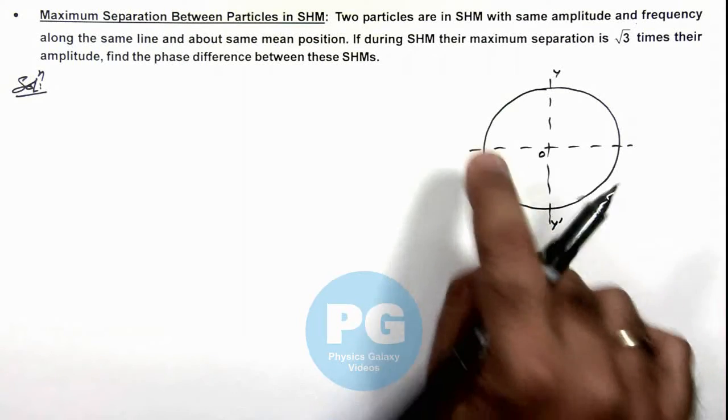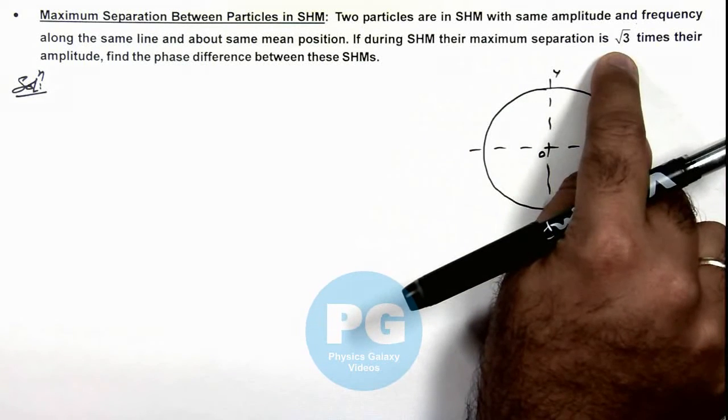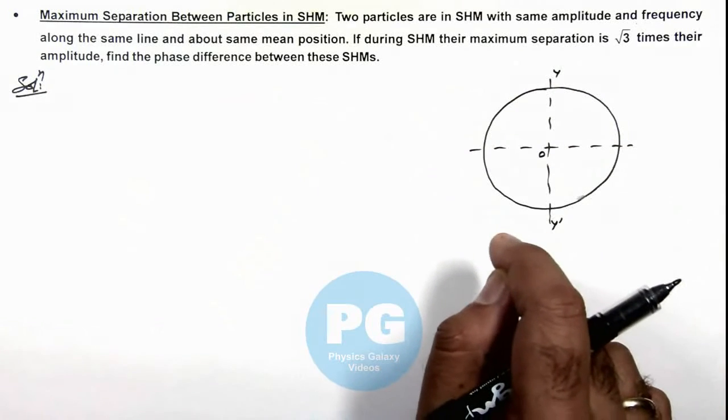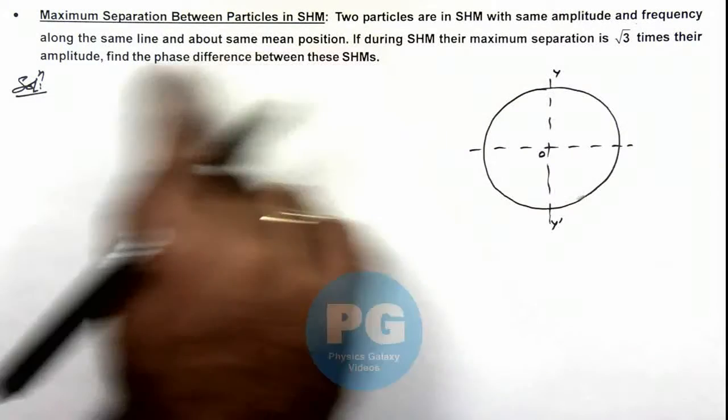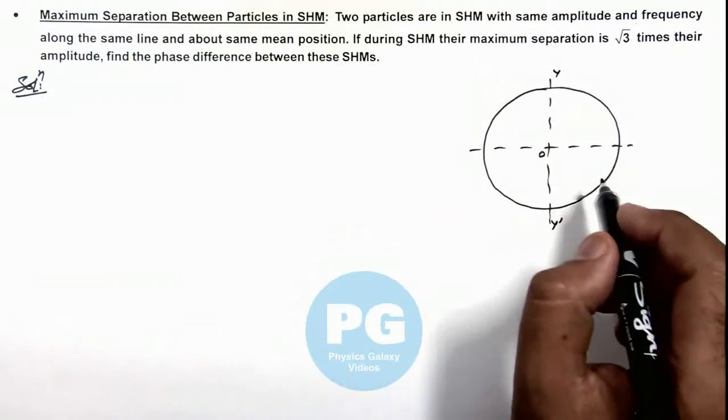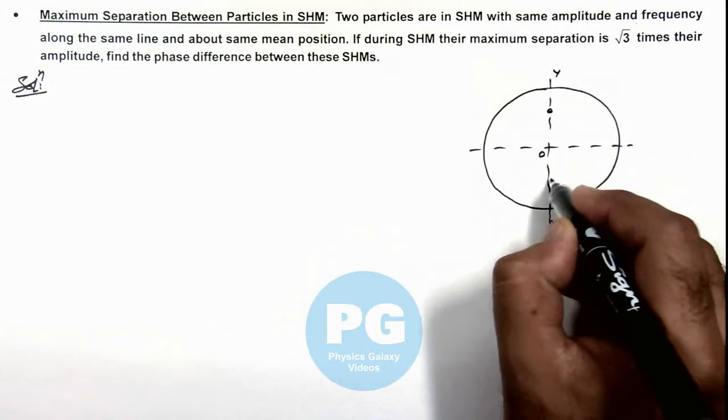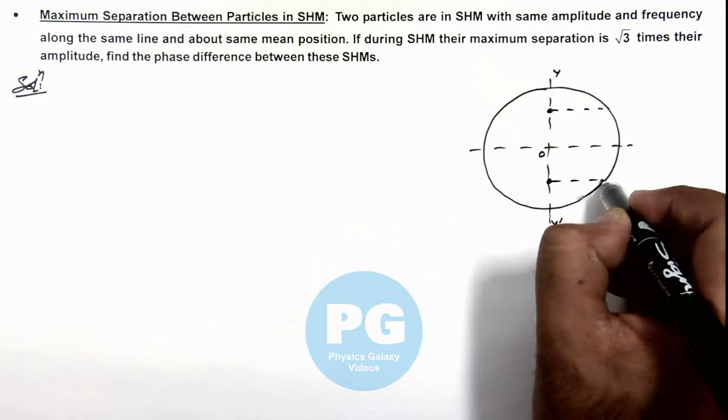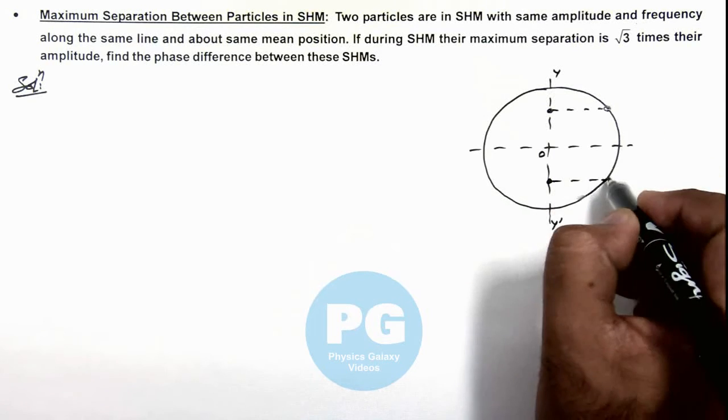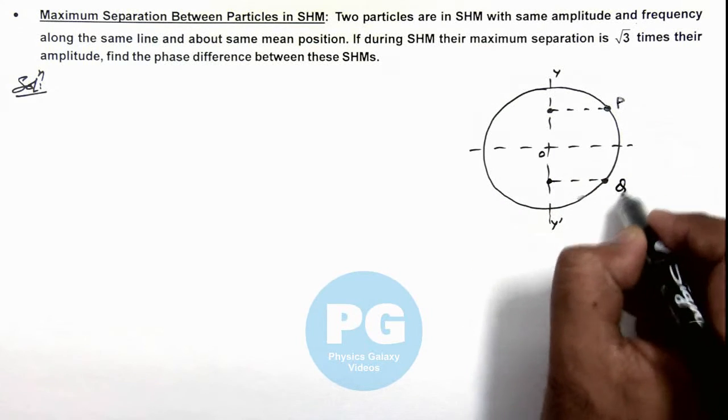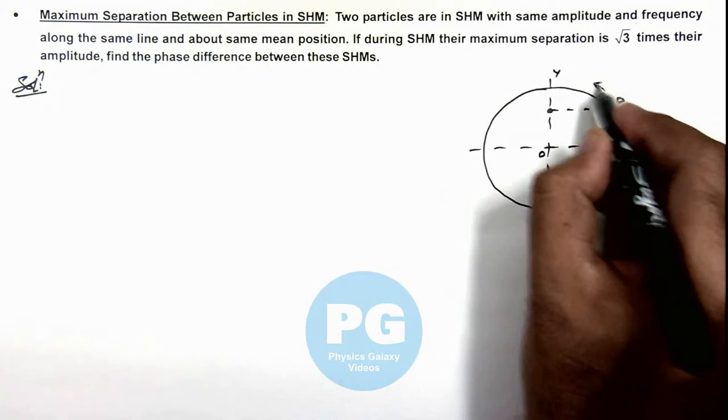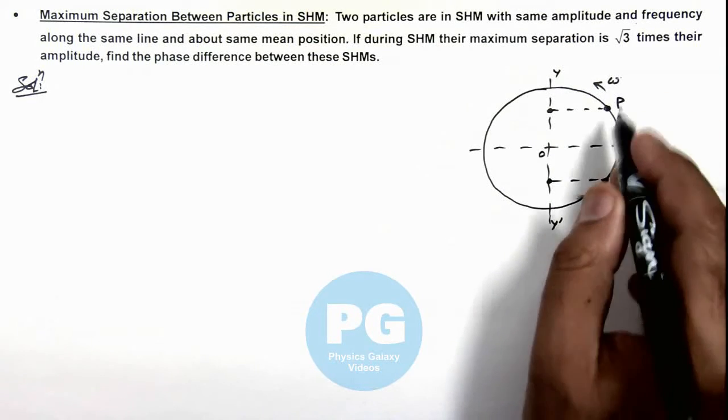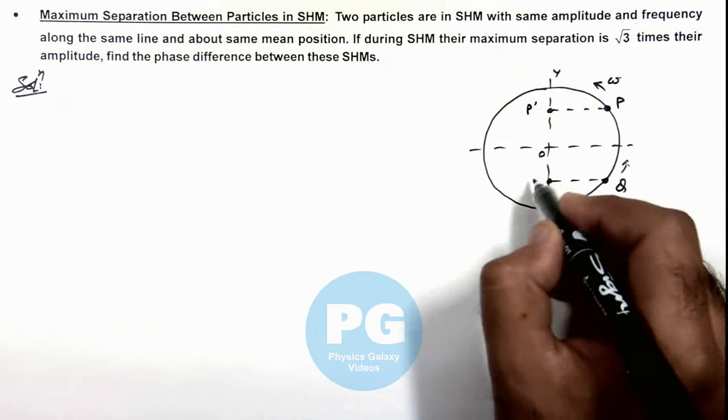We are given that their maximum separation is root 3 times their amplitude. That means when the particles are oscillating with same angular frequency, we can say maximum separation between the two particles will occur when they are exactly in the position which I am drawing here. Say if this particle is P and this particle is Q, and they are moving on the circle with the angular speed omega, which is the angular frequency of P prime and Q prime.